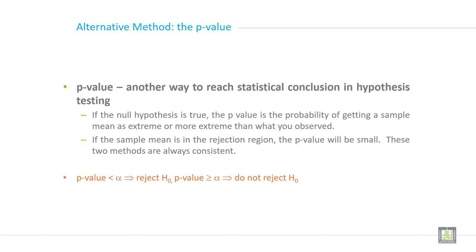If the null hypothesis is true, the p-value is the probability of getting a sample mean as extreme or more extreme than what you observed. If the sample mean is in the rejection region, the p-value will be small. These two methods are always consistent.